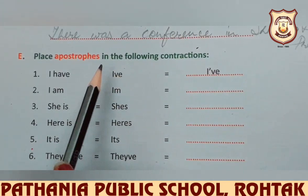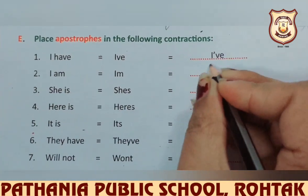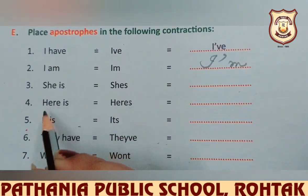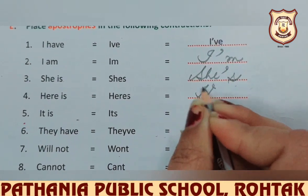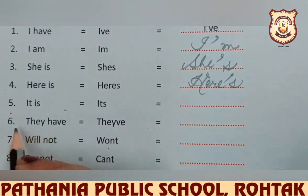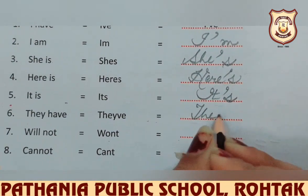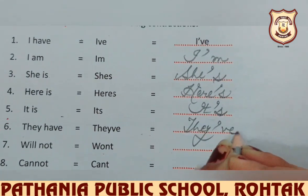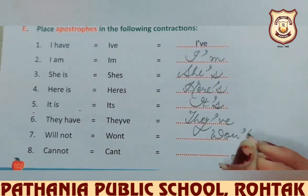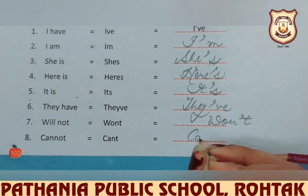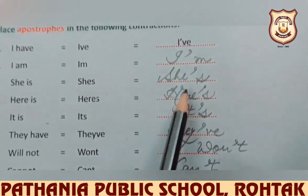Part E: Place apostrophes in the following contractions. 'I am' becomes 'I'm', 'she is' becomes 'she's', 'it is' becomes 'it's', 'they have' becomes 'they've', 'cannot' becomes 'can't'. These are apostrophe contractions — you use the apostrophe sign to write short forms.